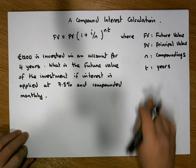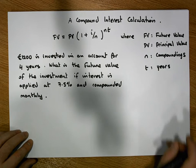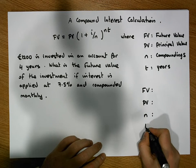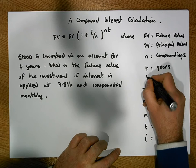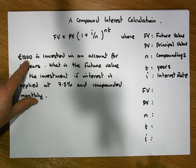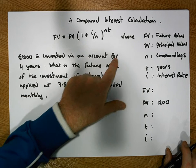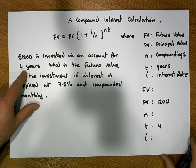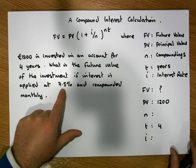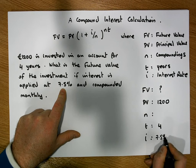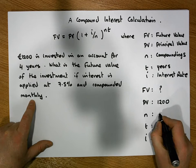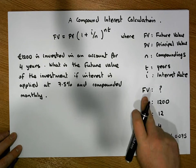From our parameters perspective, we have four values to identify. We have the future value, the principal value, the number of compoundings n, the interest rate i, and t. In our scenario, the principal value PV is 1200, t is equal to 4, and the interest rate i is 7.5%, which is equivalent to 0.075 as a decimal. Since compounding happens monthly, n is equal to 12. We have all parameters except the future value, which we need to calculate.